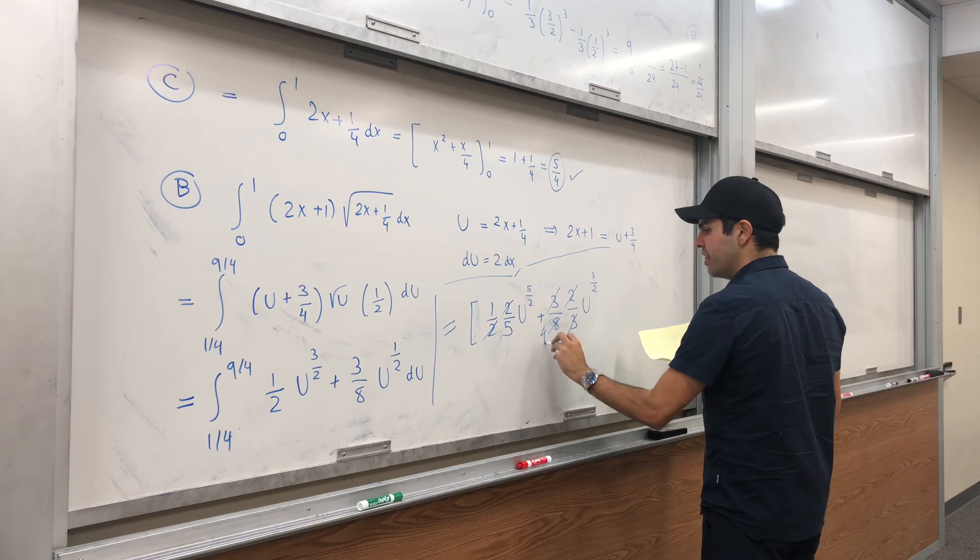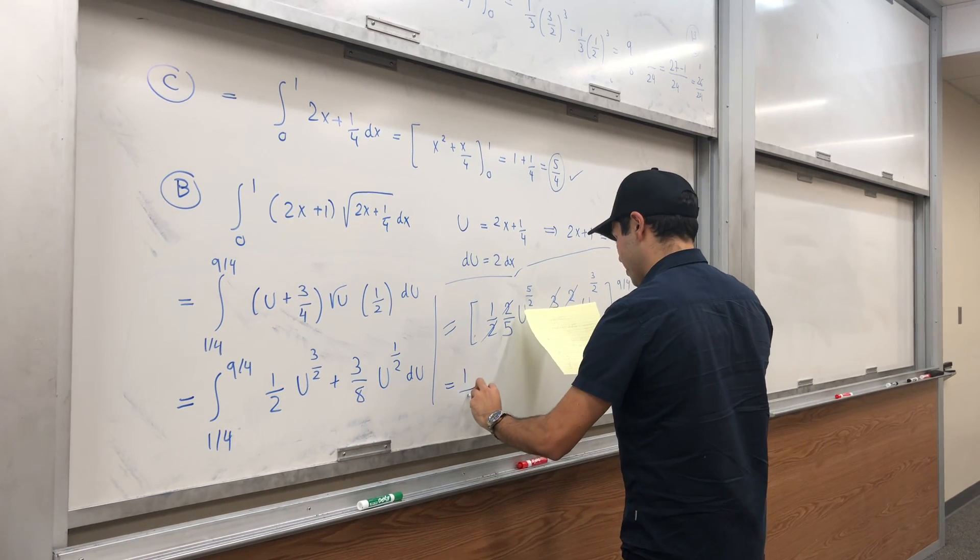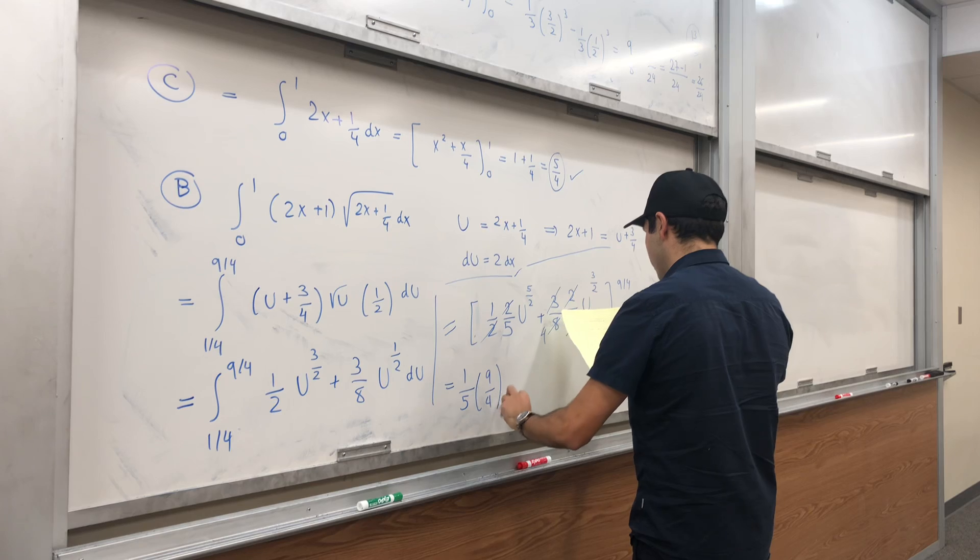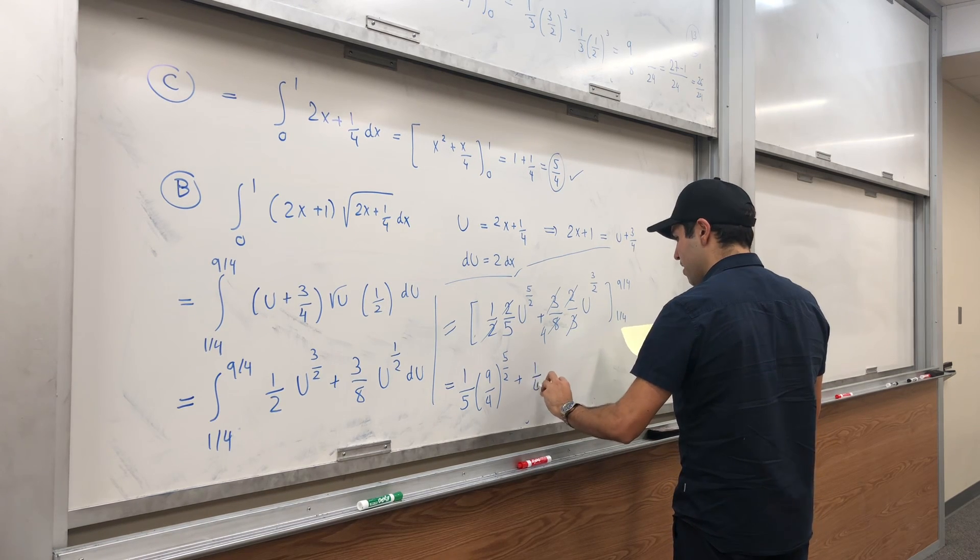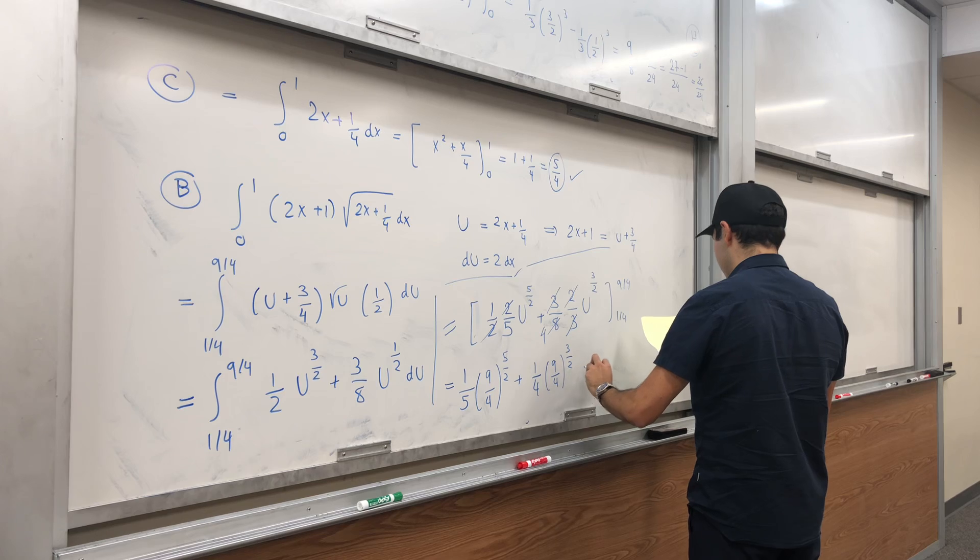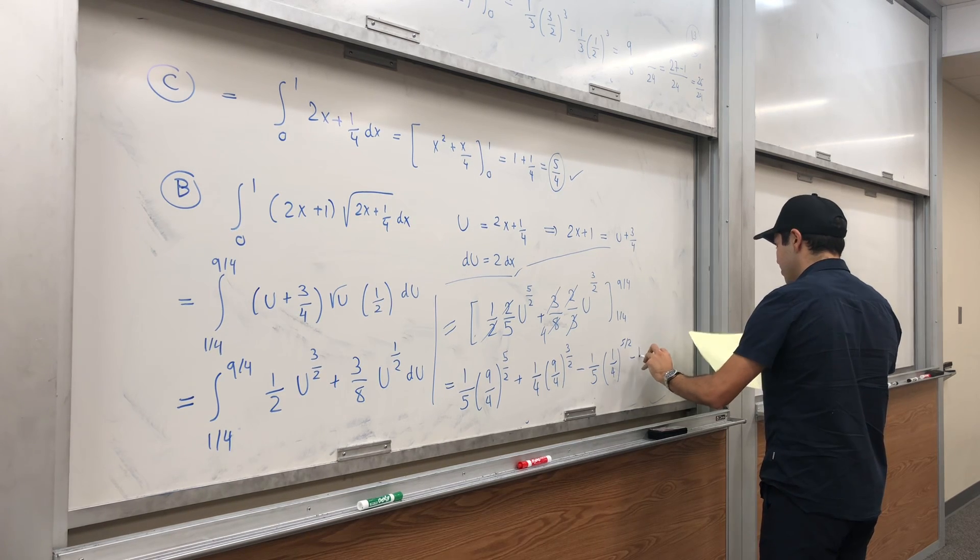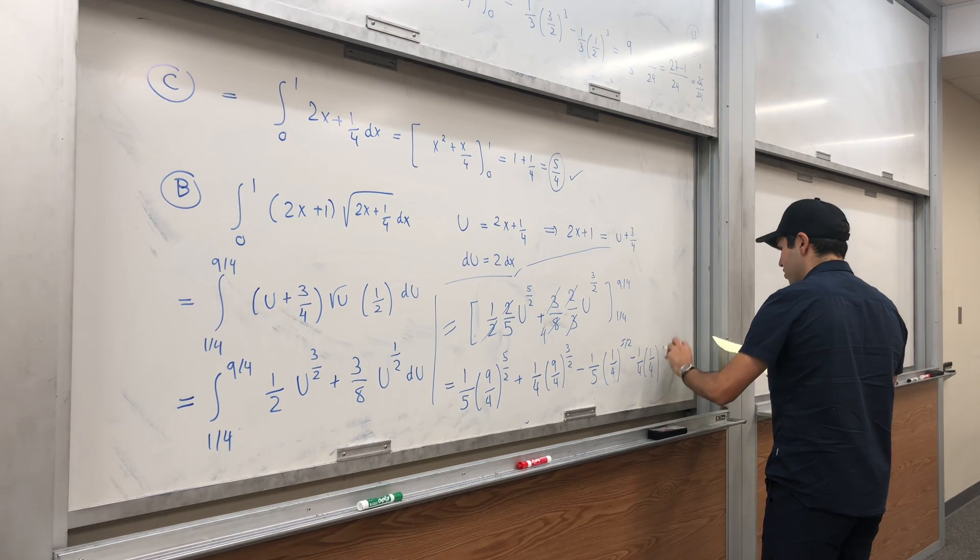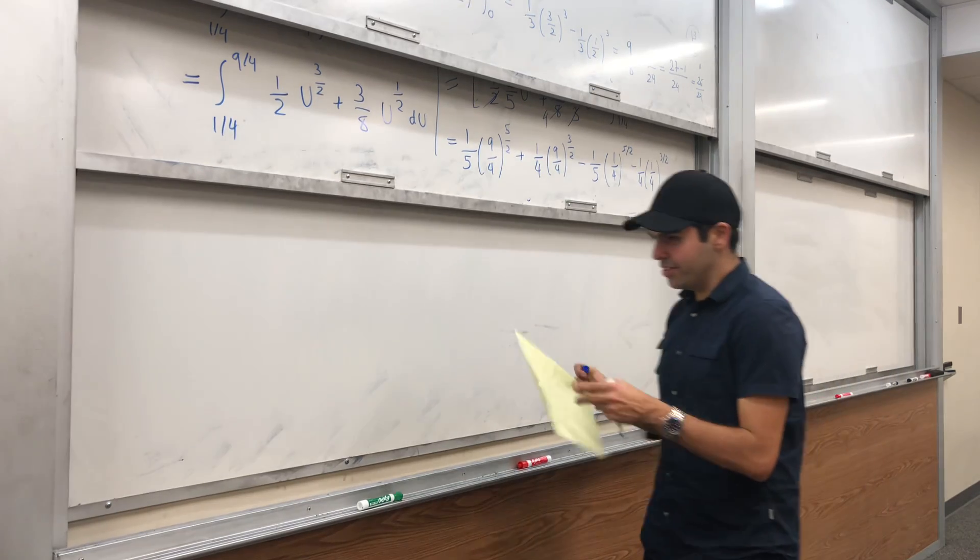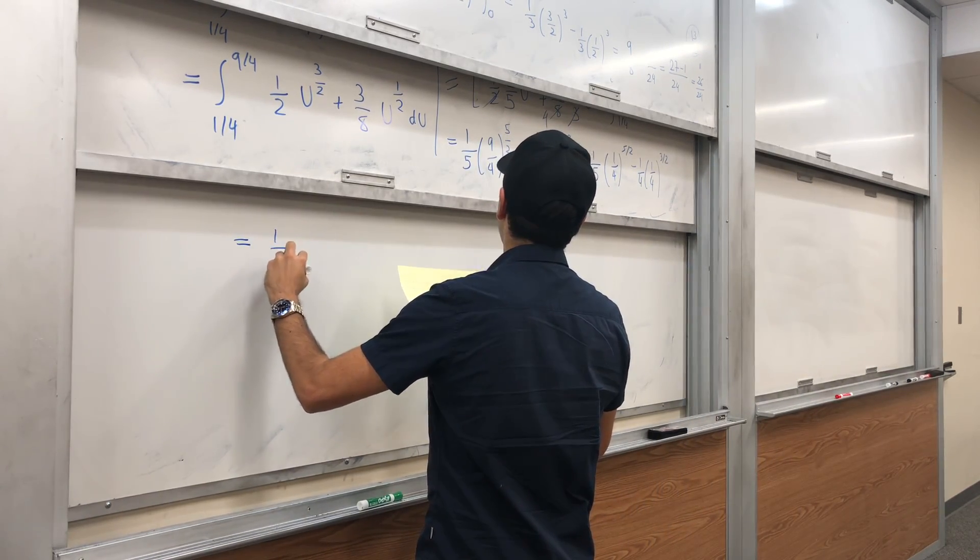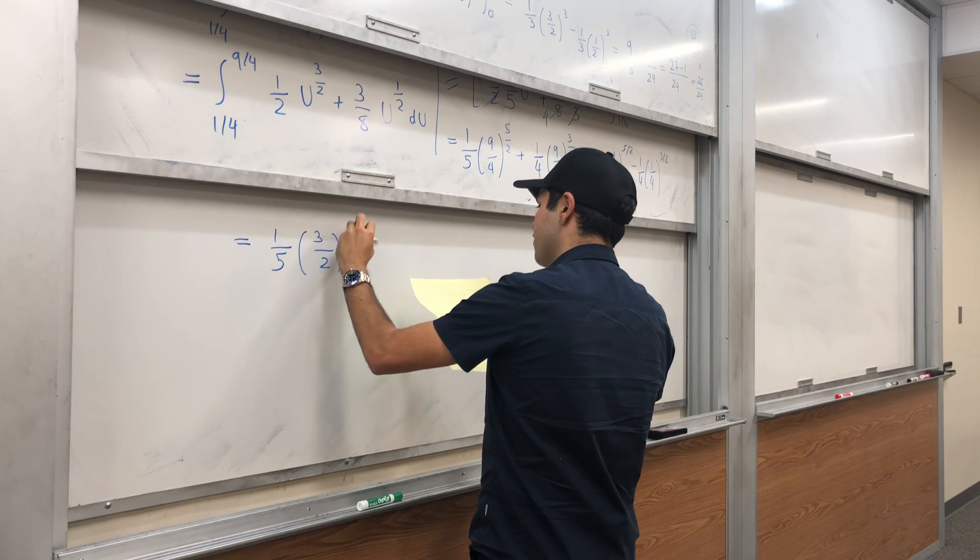And so this becomes 1/5 times (9/4)^(5/2) plus 1/4 times (9/4)^(3/2), and then the same thing with 1/4: 1/5 times (1/4)^(5/2) minus 1/4 times (1/4)^(3/2). Okay, good. And we can simplify that. So square root of 9/4 just becomes 3/2, so 1/5 times (3/2)^5, and then same, 1/4 times (3/2)³.